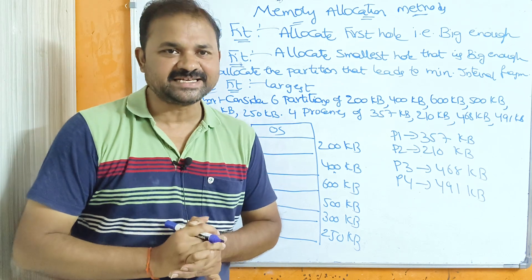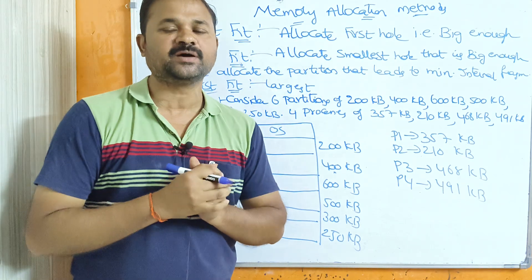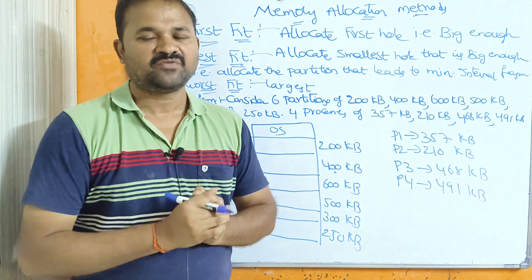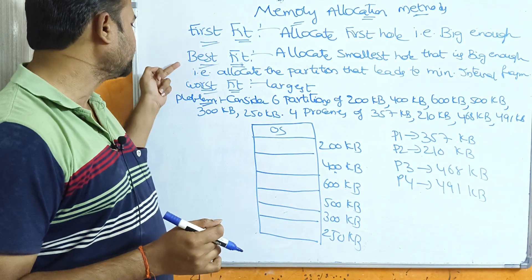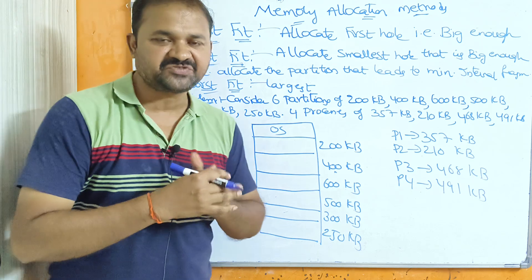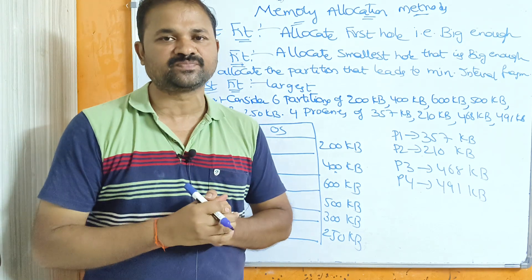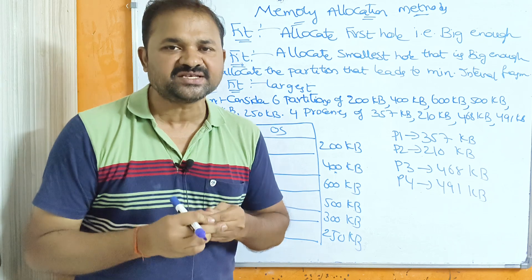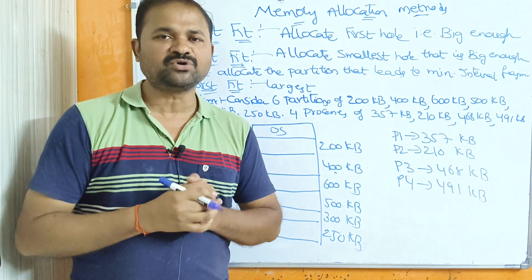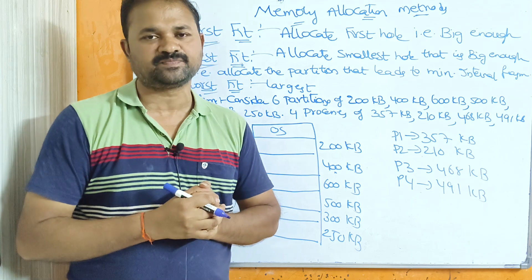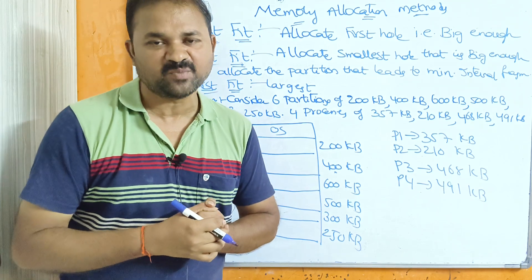Now let us discuss about memory allocation methods. We have mainly three methods: first fit, best fit, and worst fit. These three methods are mainly useful in contiguous memory allocation techniques. We have two types of memory allocation: contiguous memory allocation and non-contiguous memory allocation.